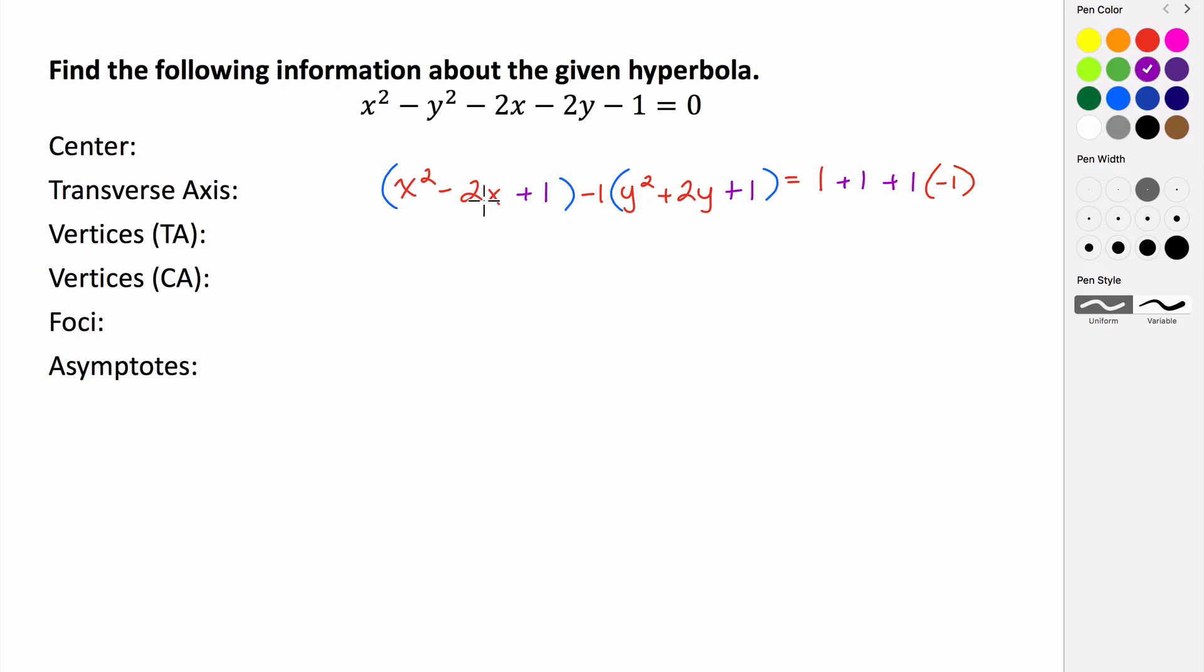Then we have to factor each of our groups. So this quantity of the x's being grouped factors to be x minus 1 quantity squared, minus this quantity factors to be y plus 1 quantity squared, equals, this is 1 plus 1, which is 2. This ends up being negative 1, so those kind of cancel, so we end up with just positive 1.